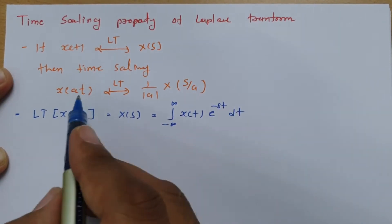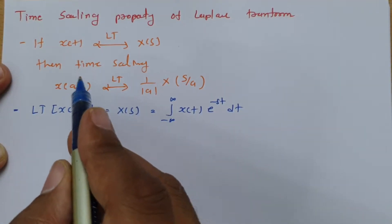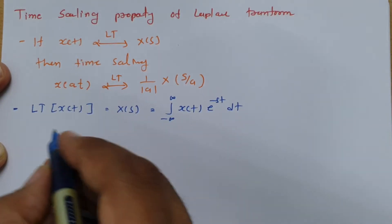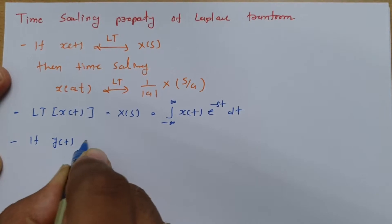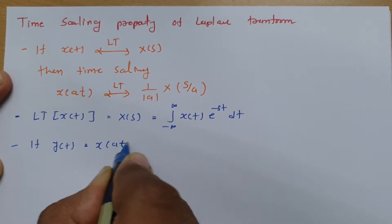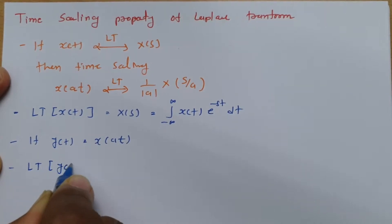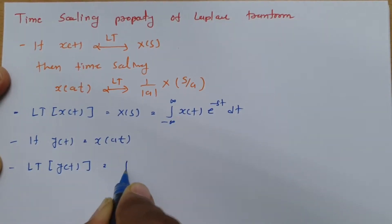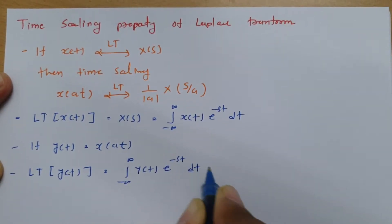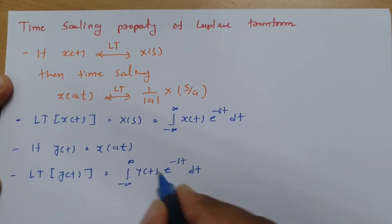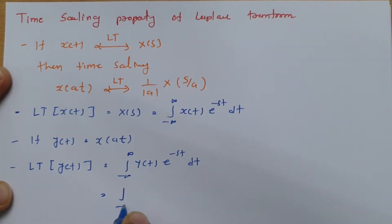To derive this property, let us consider the Laplace transform of x(at). If I say y(t) = x(at), then the Laplace transform of y(t) is the integral from minus infinity to infinity of y(t) · e to the power minus s·t dt, and y(t) equals x(at). Let us place that in the expression.